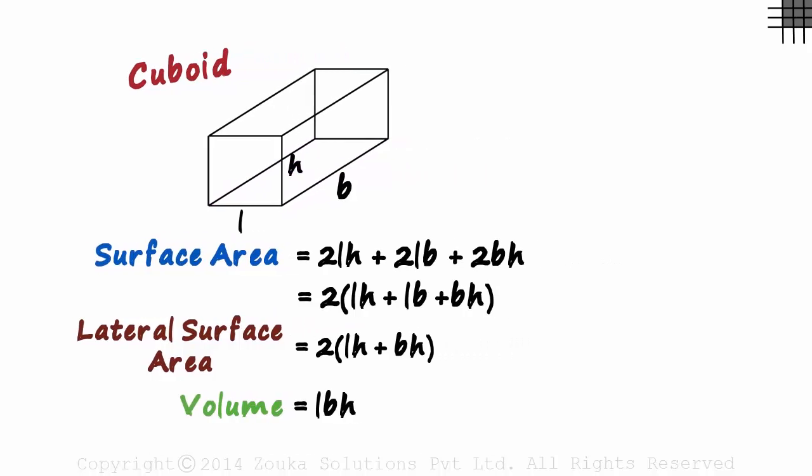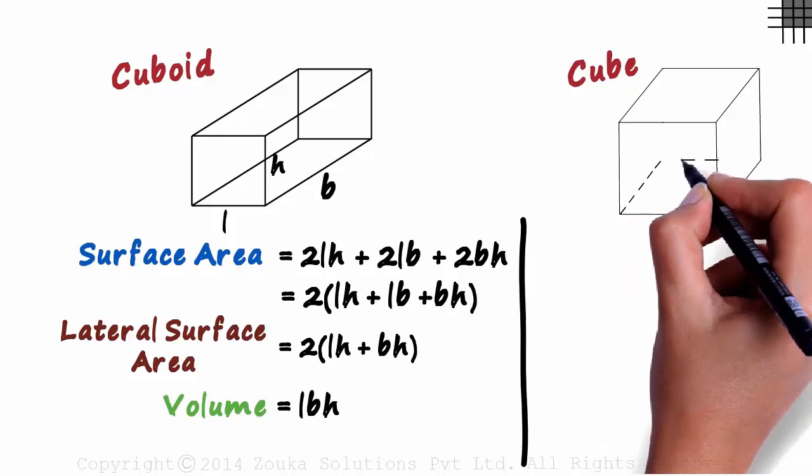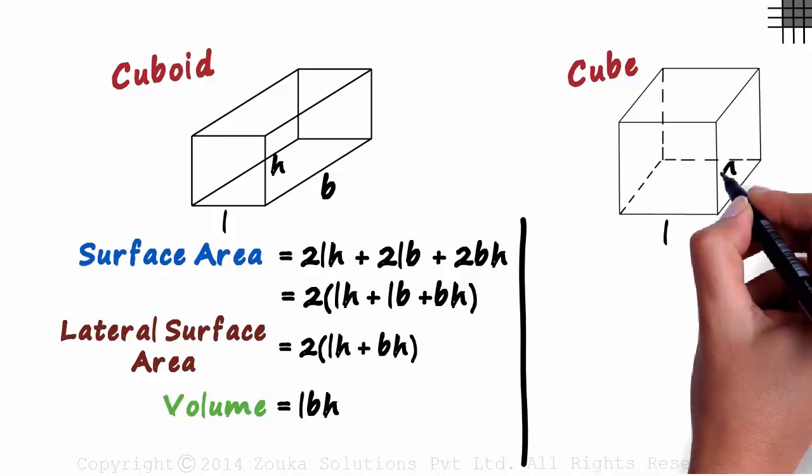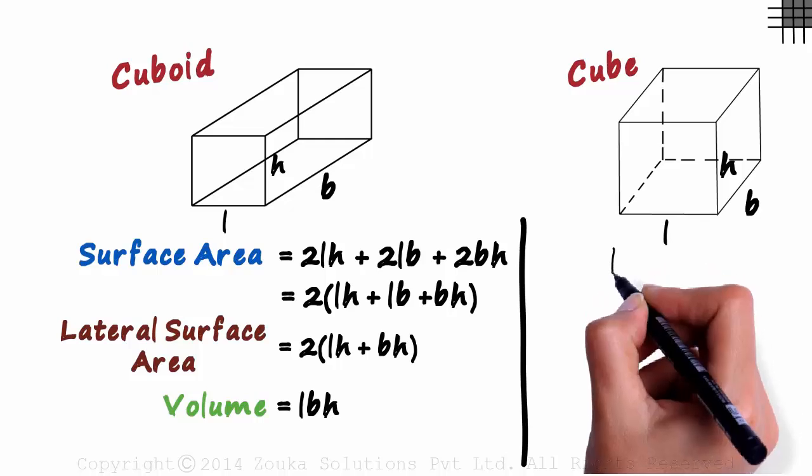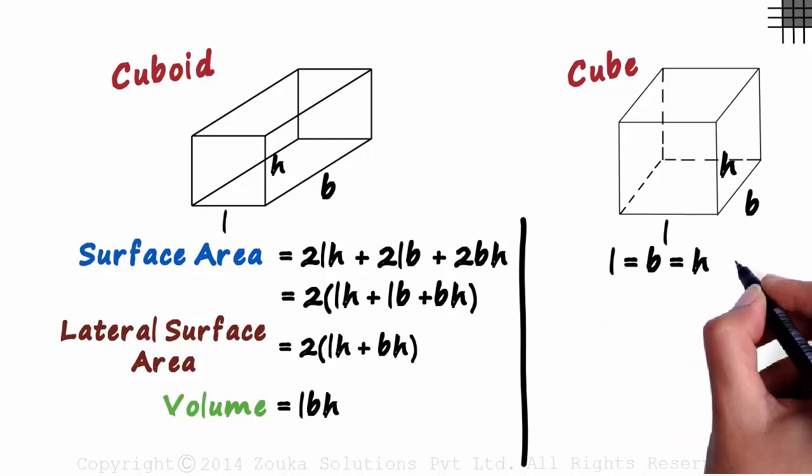Knowing stuff about cuboids also helps us understand its special case, the case of a cube. It looks similar to a cuboid. It has length, breadth, and height with the only difference being that all three are equal. Let's say each is equal to S units.